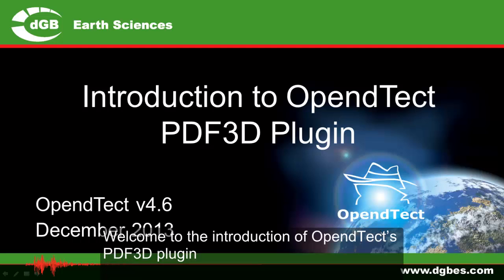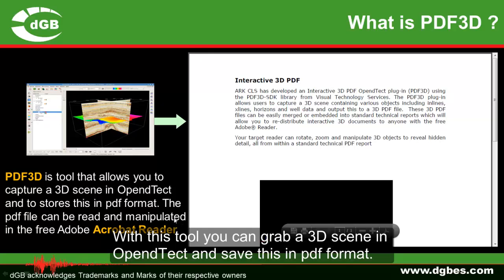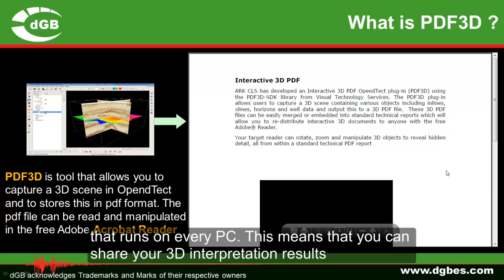Welcome to the introduction of OpenDetect's PDF3D plugin. With this tool you can grab a 3D scene in OpenDetect and save it in PDF format. Nowadays 3D visualization of PDF files is supported in the free Adobe Acrobat Reader that runs on every PC.